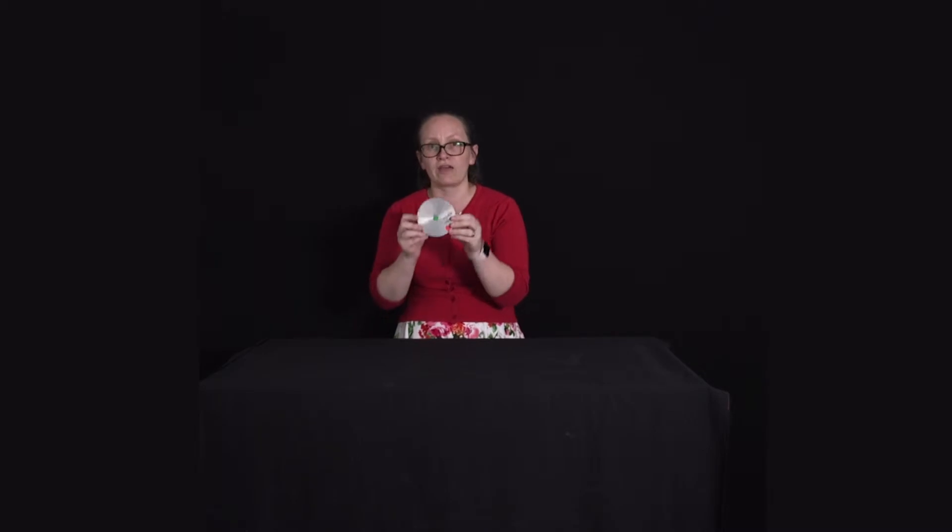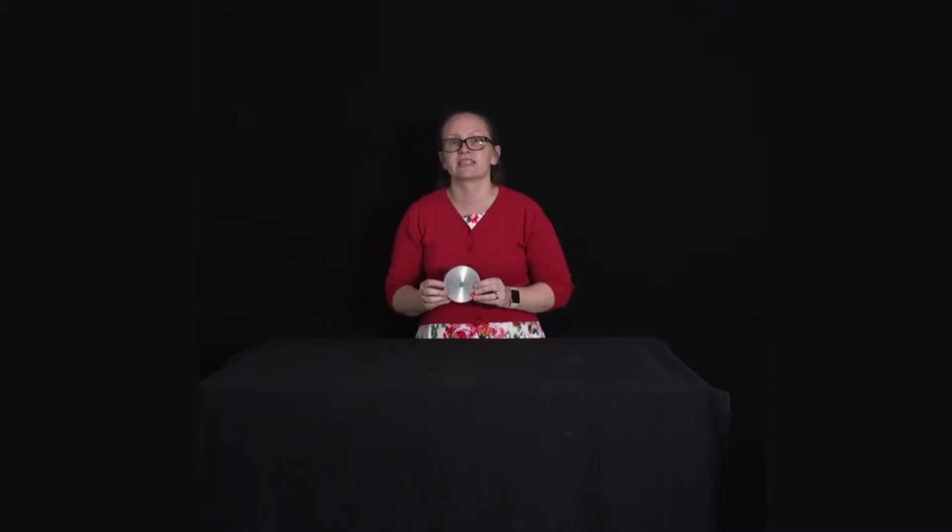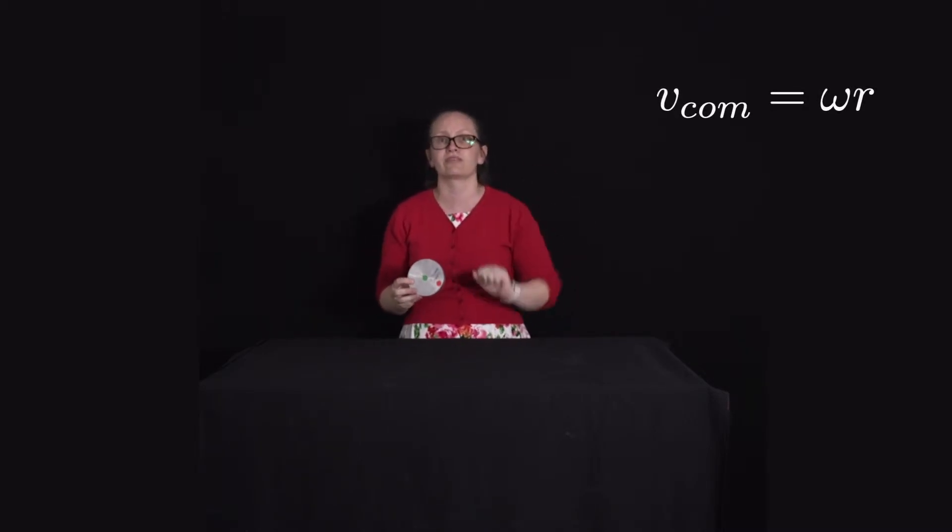It helps to consider the translational motion and the rotational motion separately. The translational motion tells us how the centre of mass of this object is moving through space. The speed of the centre of mass of a round object is given by v_com = ωr.